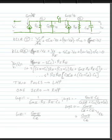We take our output from this node. So we put our input in here. This is GM1 times VN. This is R1, C1. This is GM2 times V1, R2, and C2.